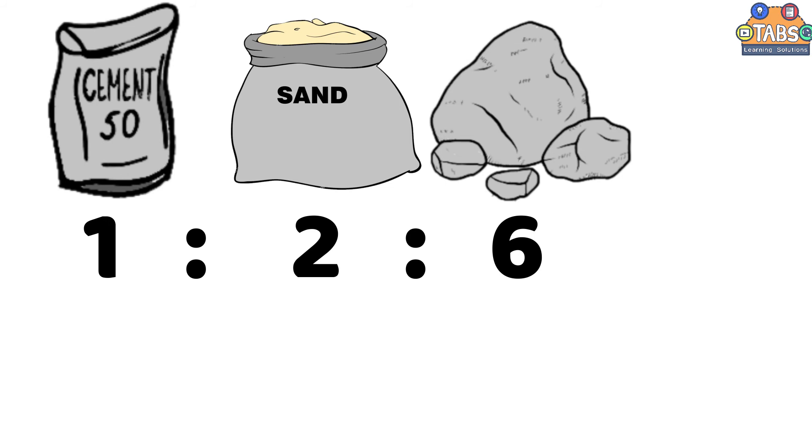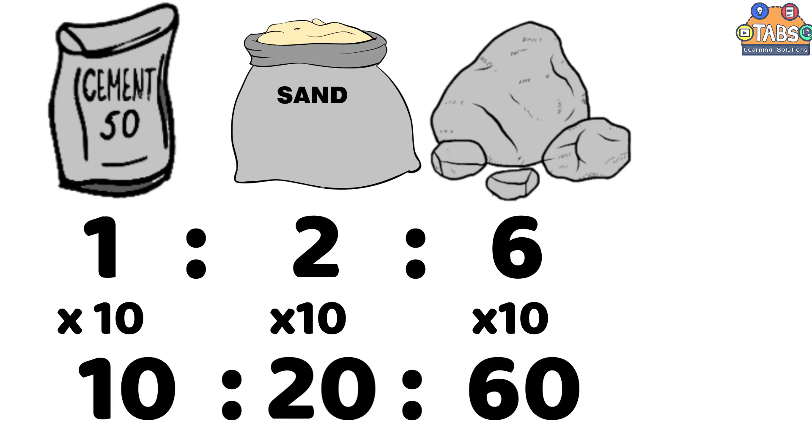You can multiply all values by the same amount and you will still have the same ratio. For example, if you multiply all the values by 10, it will be 10 is to 20 is to 60, which is the same as 1 is to 2 is to 6. So, if you use 10 buckets of cement, you should use 20 buckets of sand and 60 buckets of stone. Again, the order of numbers is important in ratio.